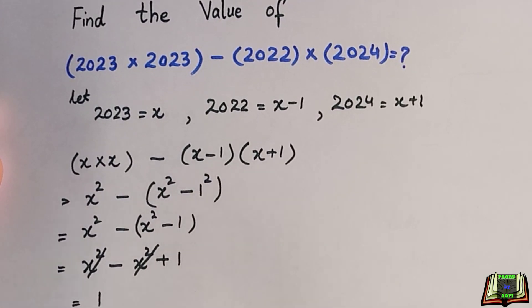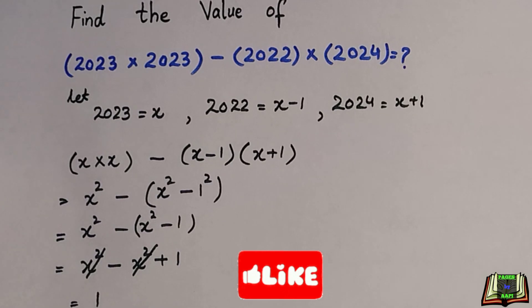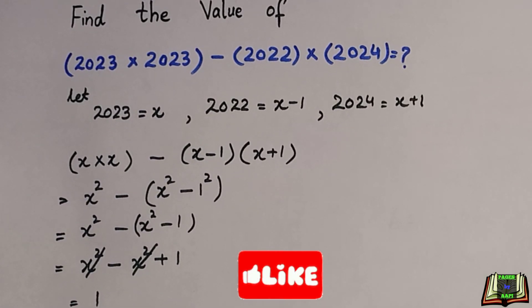x squared minus x squared, minus minus plus. This and this will be canceled out. We are left with 1. That is the required answer. Hope you find the solution easy. Like and share with your friends. Thanks for watching.